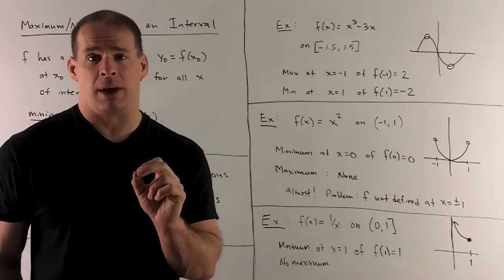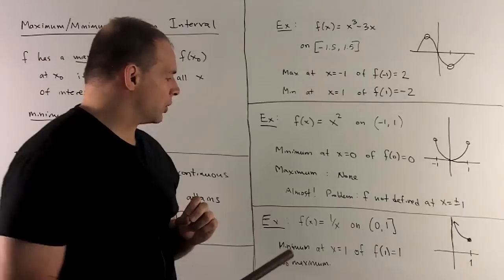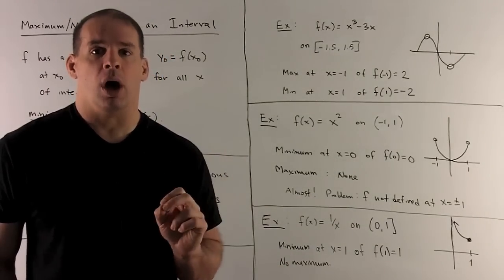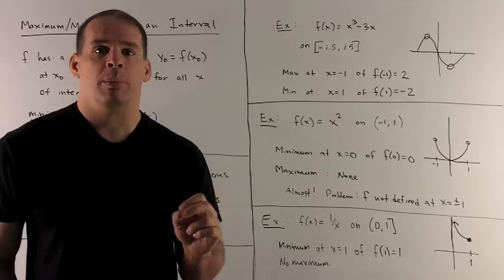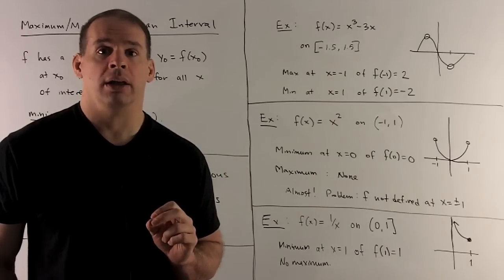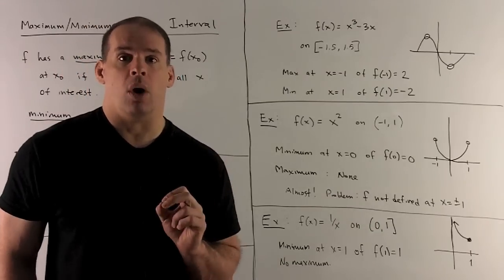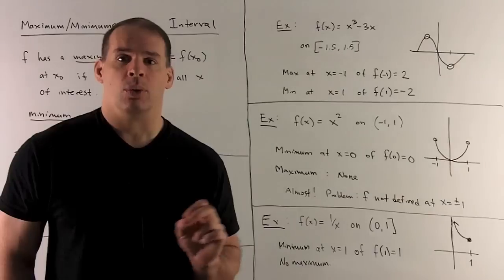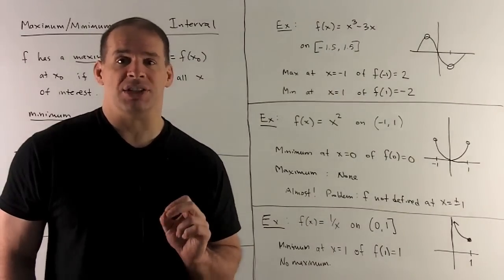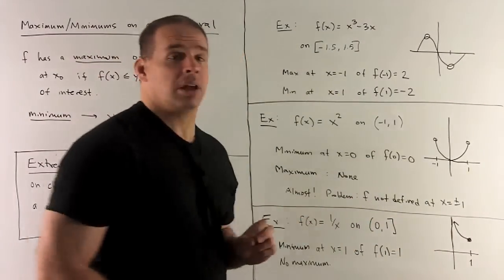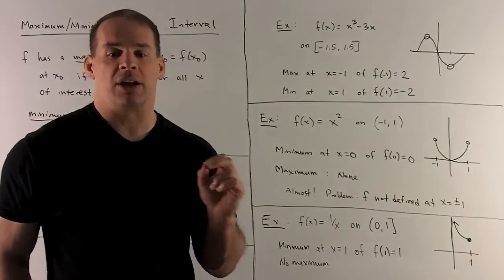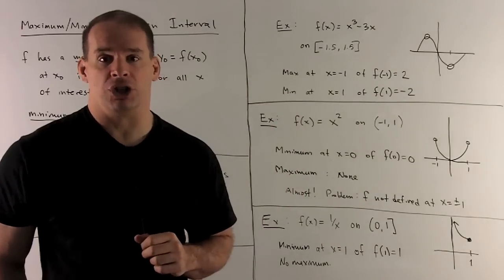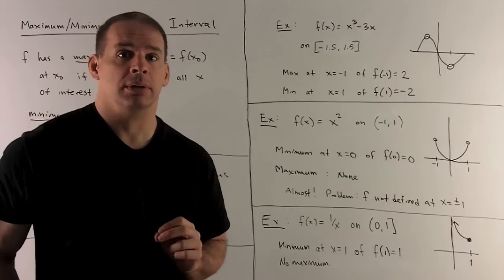More typical for not having a maximum: take f of x equal to 1 over x on the interval (0, 1] — we leave out 0 but include 1. There's a minimum at x equal to 1, so f of 1 is equal to 1. As we go into 0, the function gets large without bound, so there's no number sitting above every value of the function. Therefore, no maximum.